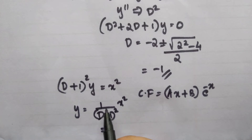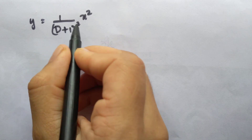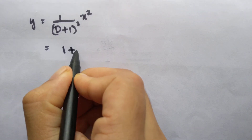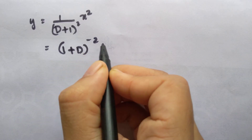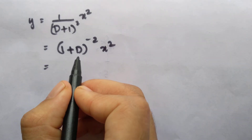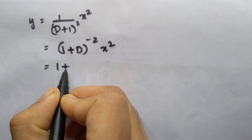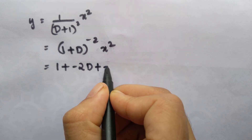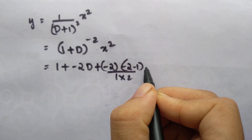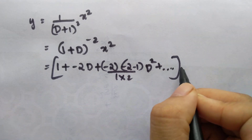We take D plus 1 all square from the denominator to the numerator, giving us 1 plus D all raise to minus 2 into x square. We expand this using the binomial expansion: 1 plus D all raise to minus 2 equals 1 plus minus 2 D plus minus 2 into minus 3 divided by 1 into 2 into D square plus etc., multiplied by x square.